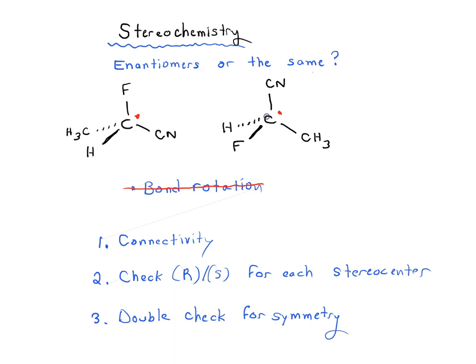The molecule on the right, we've got carbon attached to F, CN, H, and CH3. So the connectivity is identical. Therefore we know that they are not constitutional isomers. Remember, constitutional isomers have different connectivity.